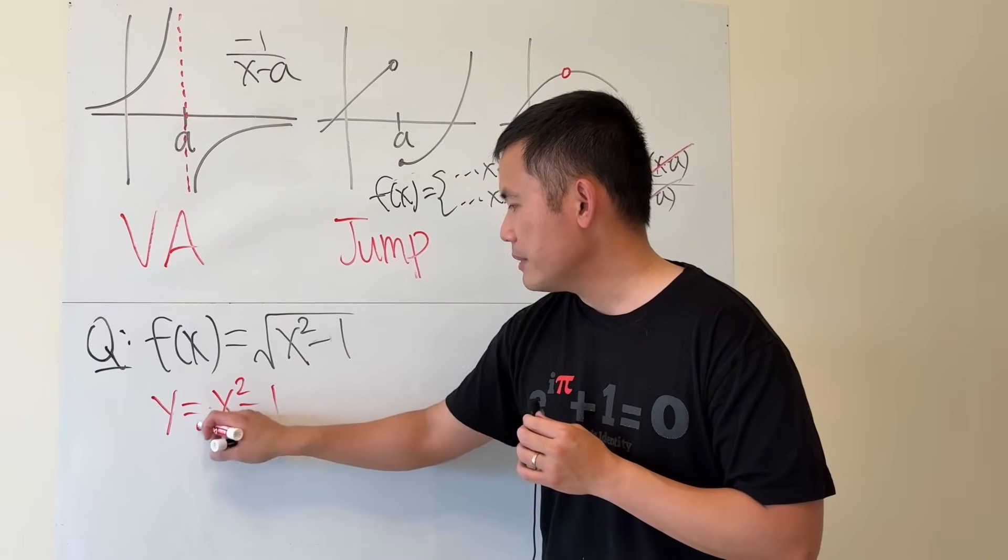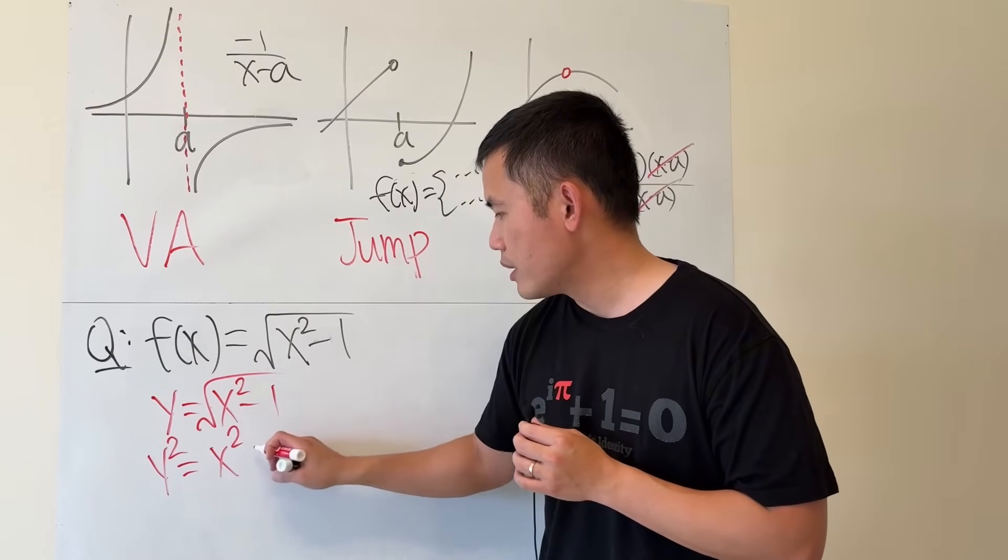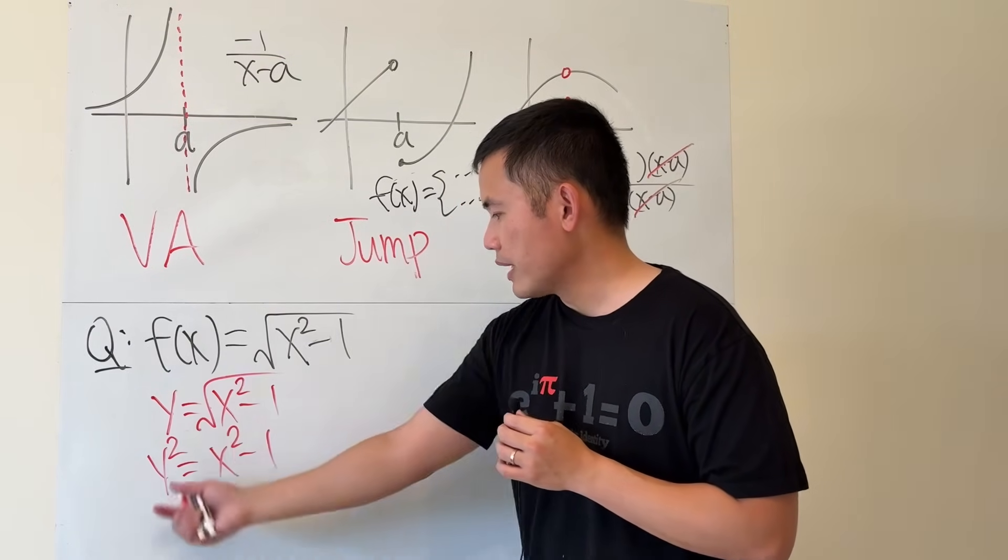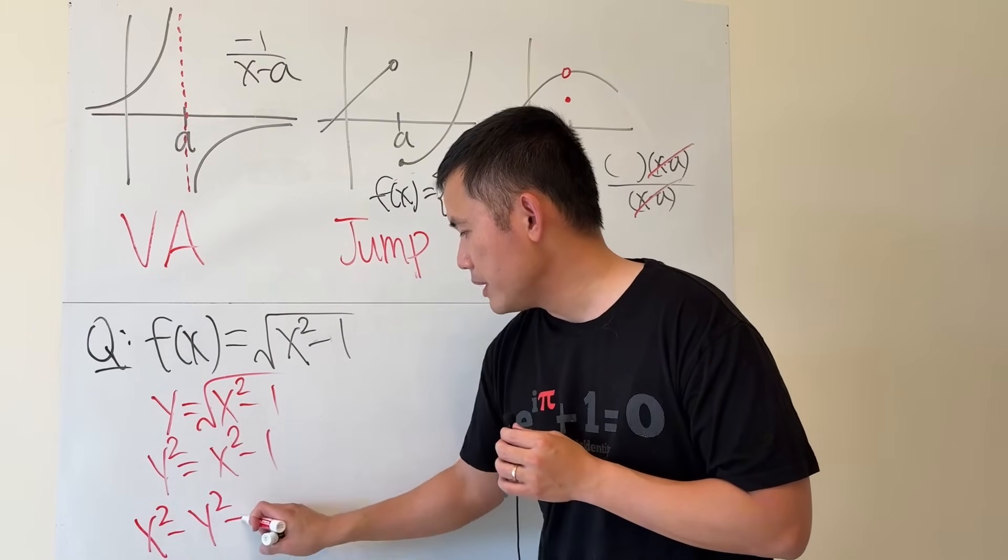this is the same as squaring both sides, we get y squared equals x squared minus 1. I'm going to move the y squared to the other side, and then 1 to the other side, but I will write this as x squared minus y squared being equal to 1.